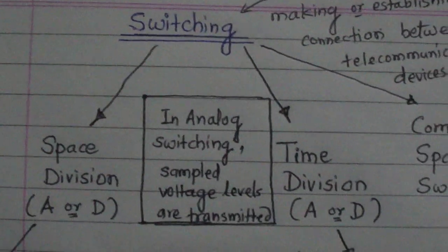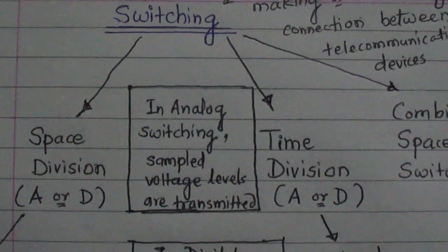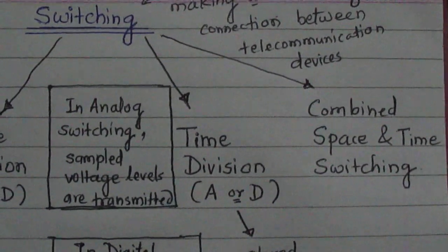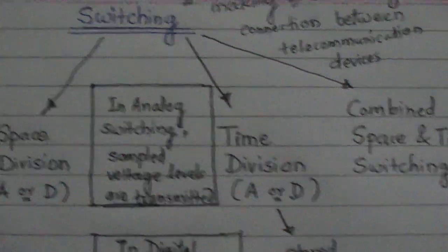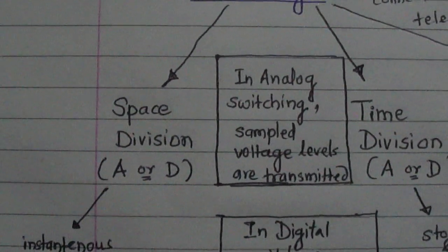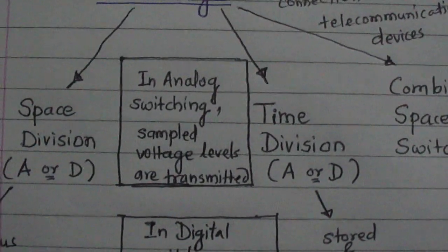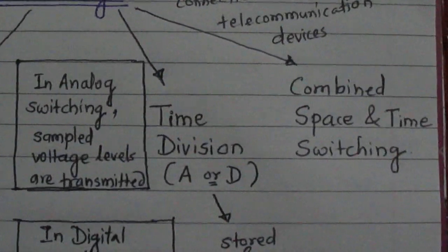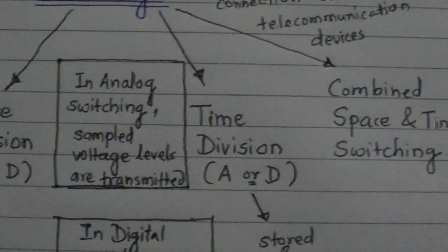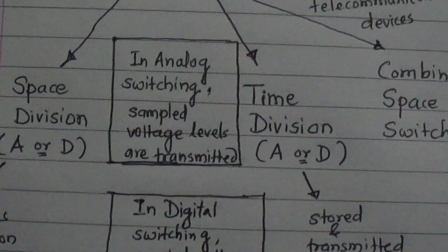There are basically three types of switching: space division switching, time division switching, and combined space and time division switching. Space division switching may be analog or digital; time division switching may also be analog or digital; and combined space and time division switching may also be analog or digital.